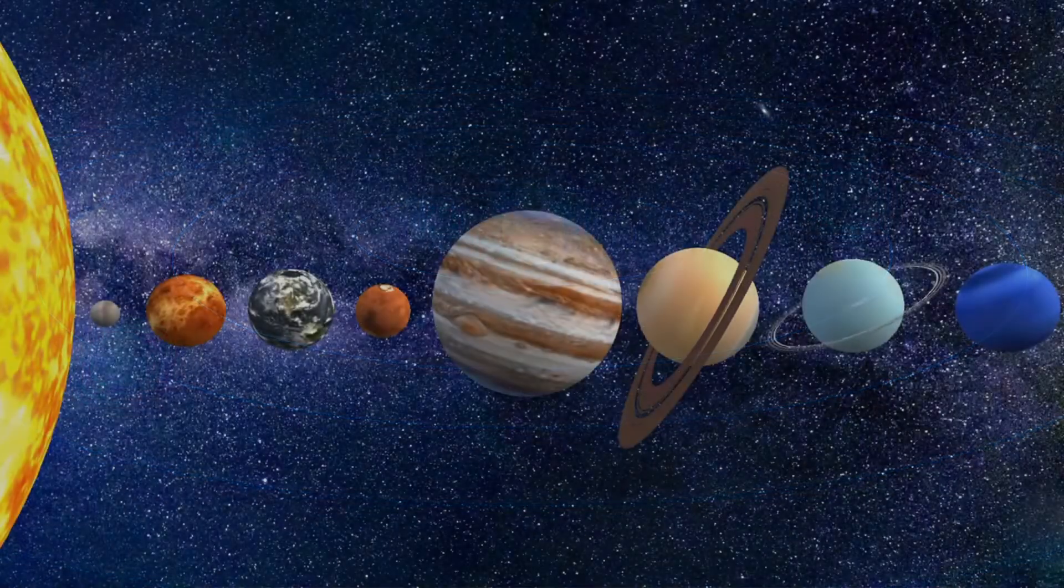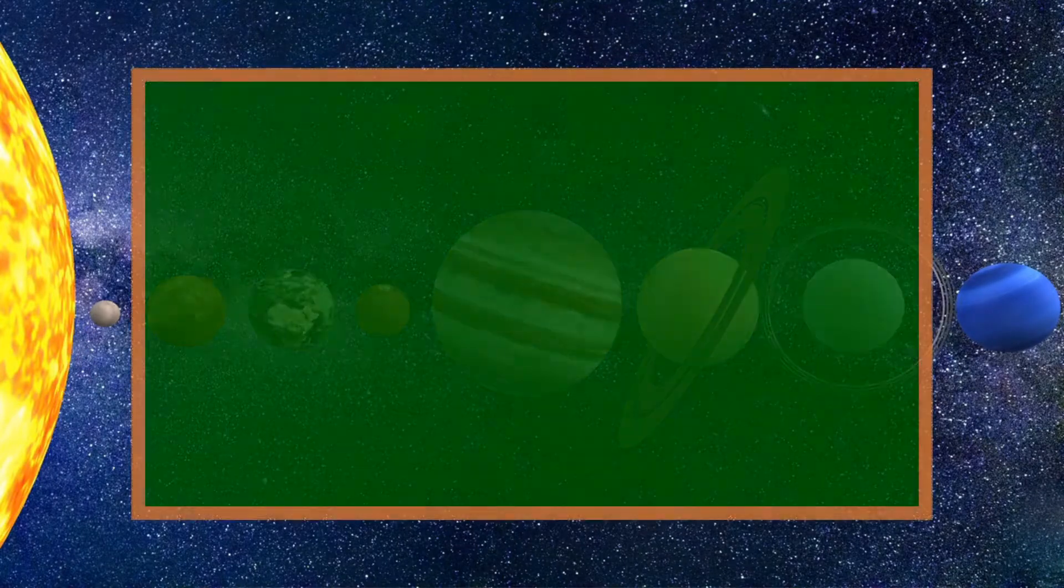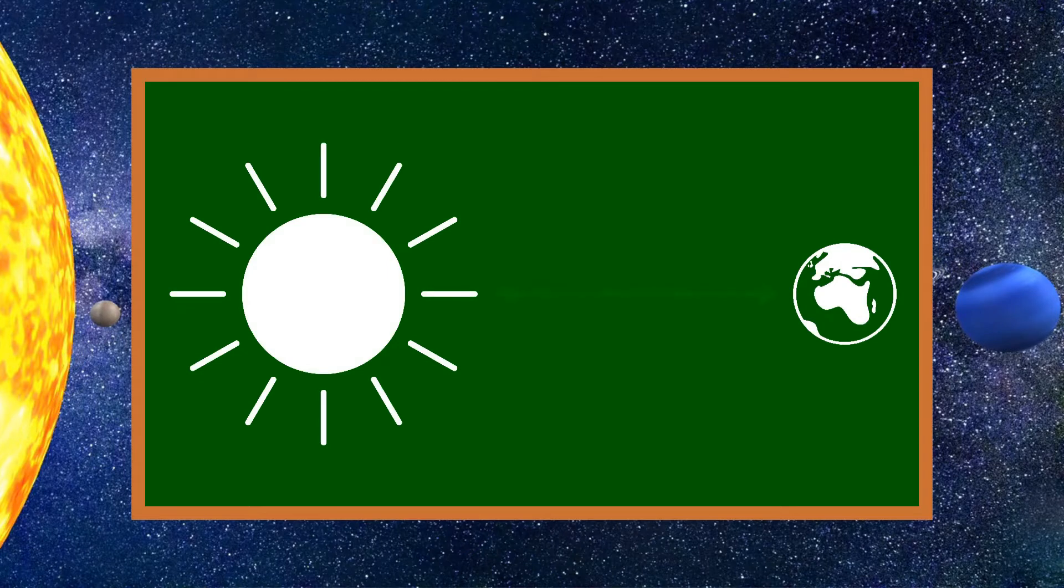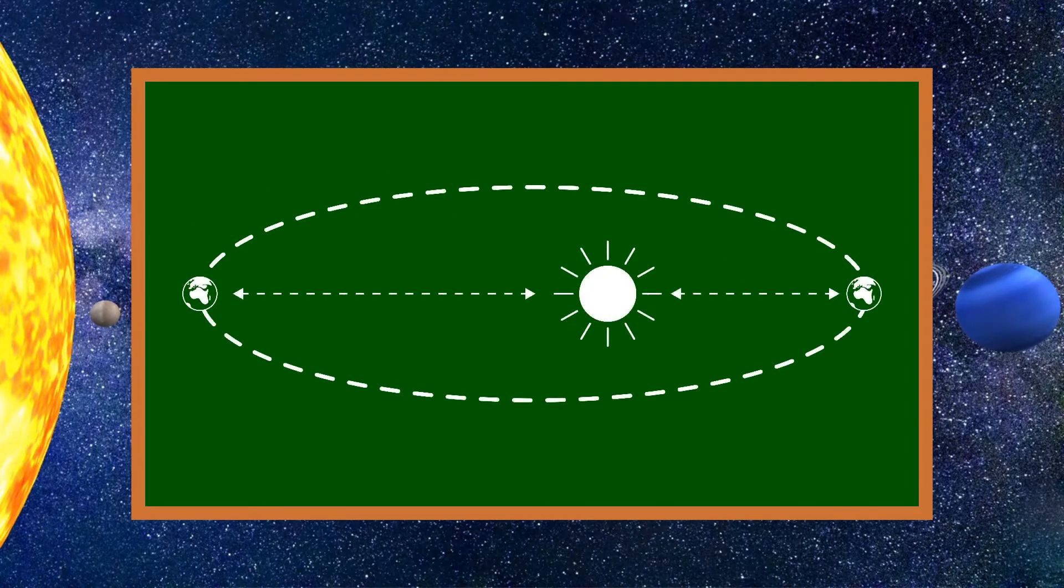When it comes to distance, the Earth is the third planet from the Sun. Its average distance from the Sun is more than 149 million kilometers. Why do we say average distance? Because the distance between the Earth and the Sun changes, and therefore the distance between them is never exactly the same.